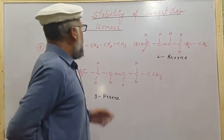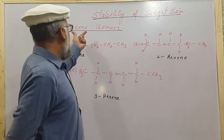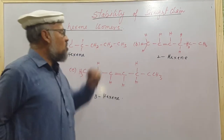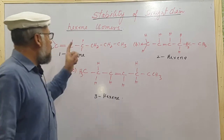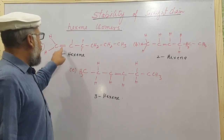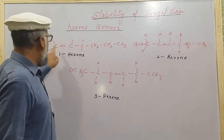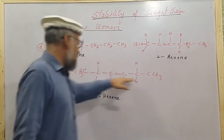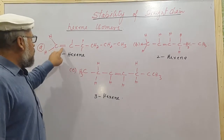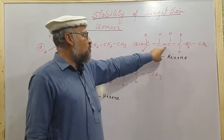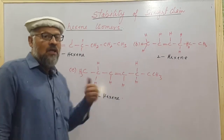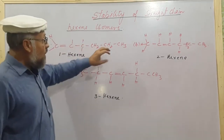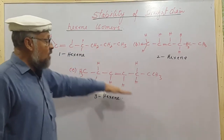Today we are going to discuss the hexene isomers — specifically the stability of straight chain hexene isomers. These are position isomers because in a straight chain of hexene numbered 1 through 6, the double bond can be at position one, position two, or position three. This makes them position isomers. The question is: which one of the three will be more stable?